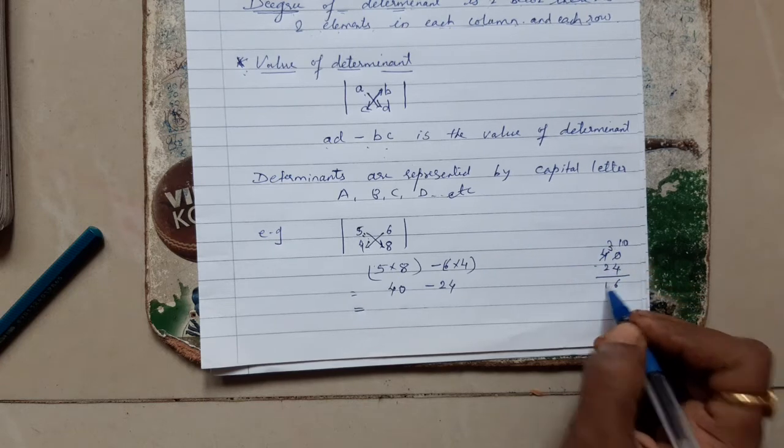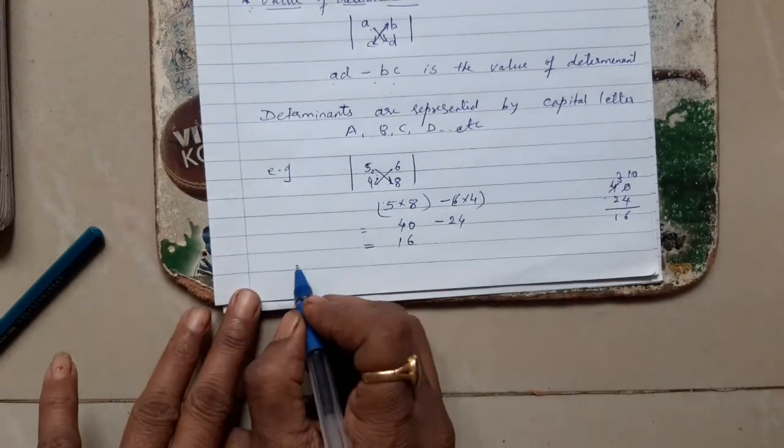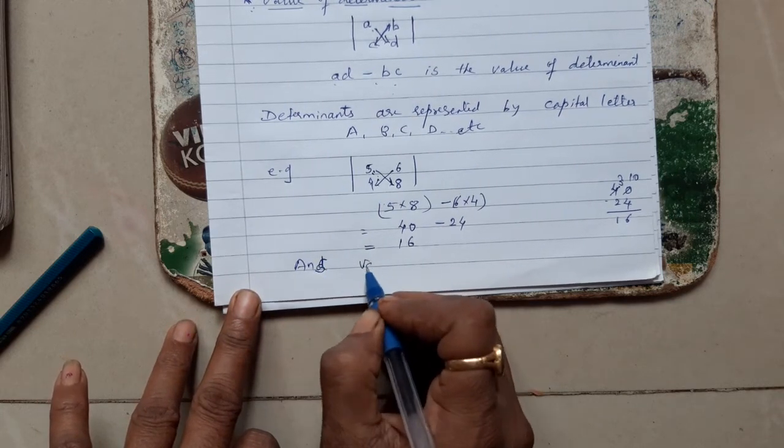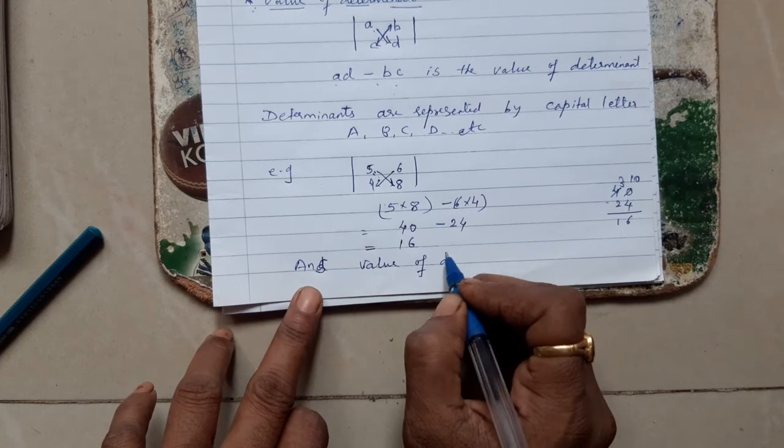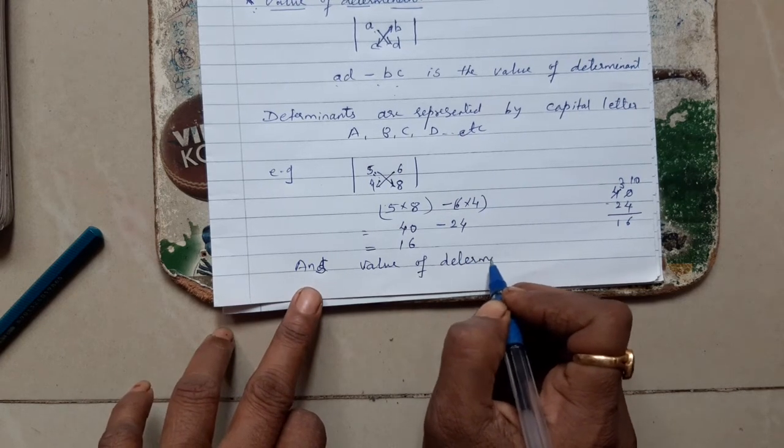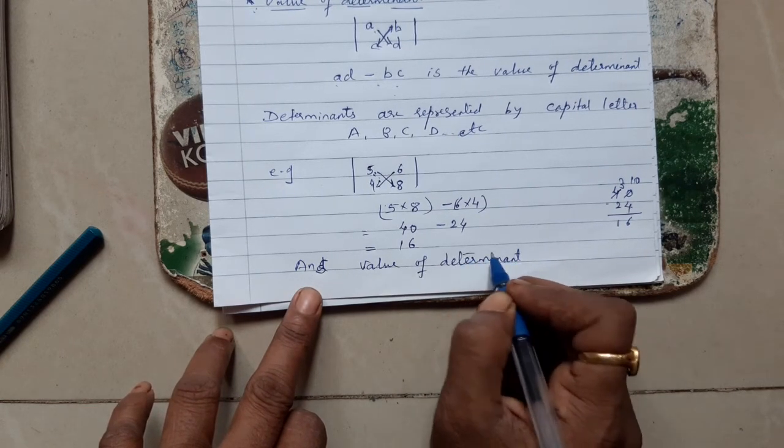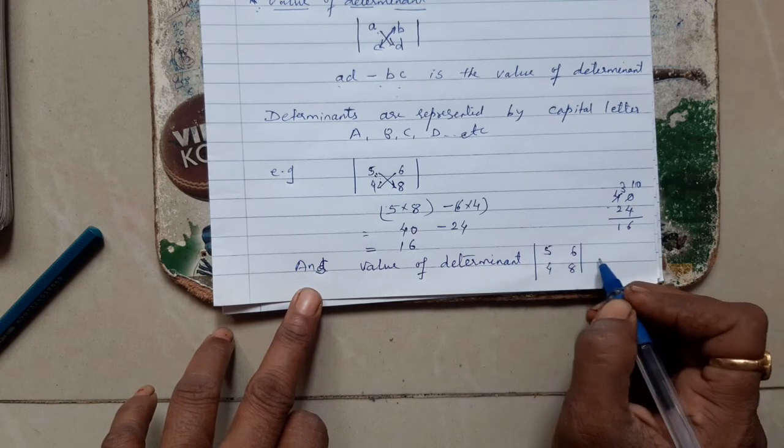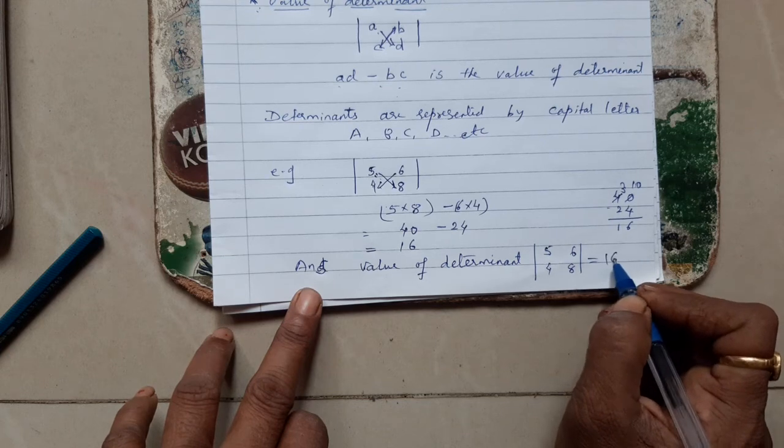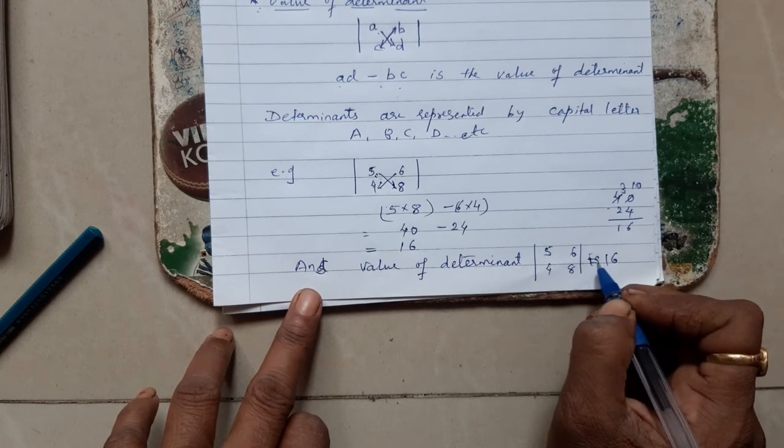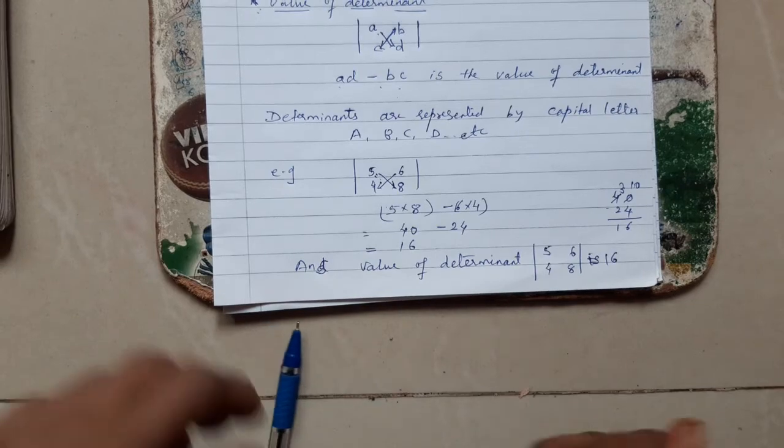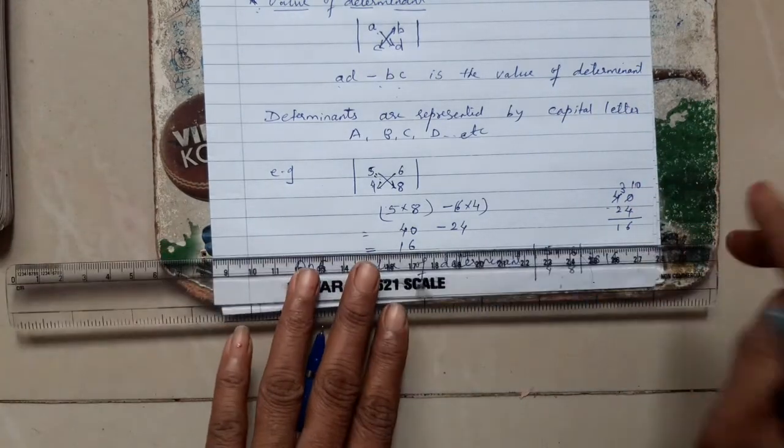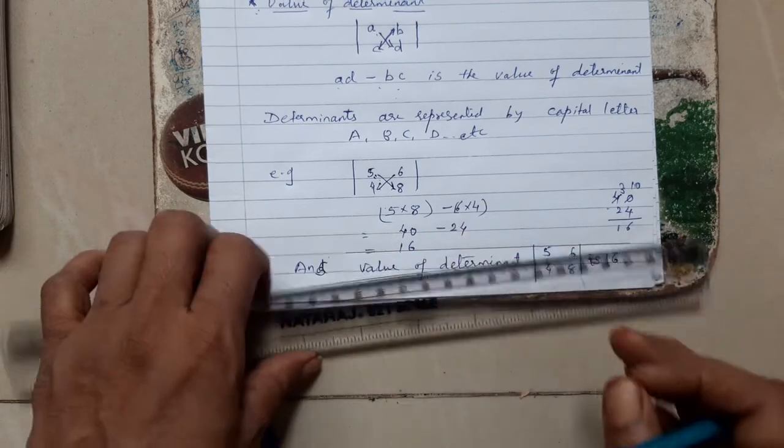The value of determinant 5 4 6 8 is 16. When you complete your answer, what you have to do is write the answer in a box. These sums are for one mark.